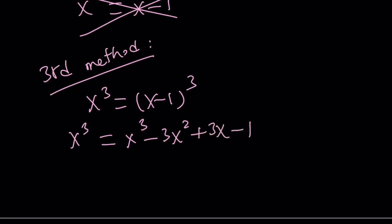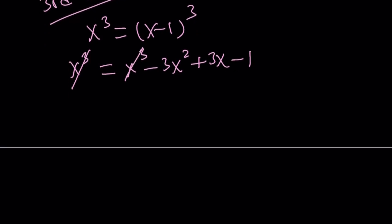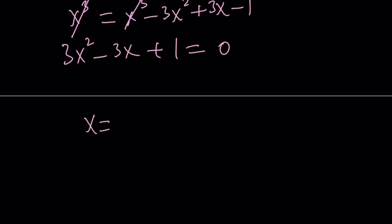In this case, x cubed cancels out. You can put everything on the left-hand side to make the x squared positive. 3x squared minus 3x plus 1 equals 0. And as before, you do get a quadratic equation whose roots are non-real complex numbers. And we can write them as x equals 3 plus minus square root of 3i divided by 6.